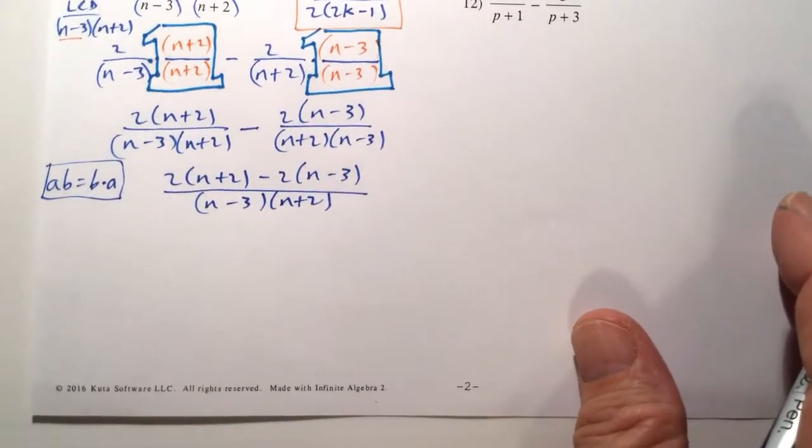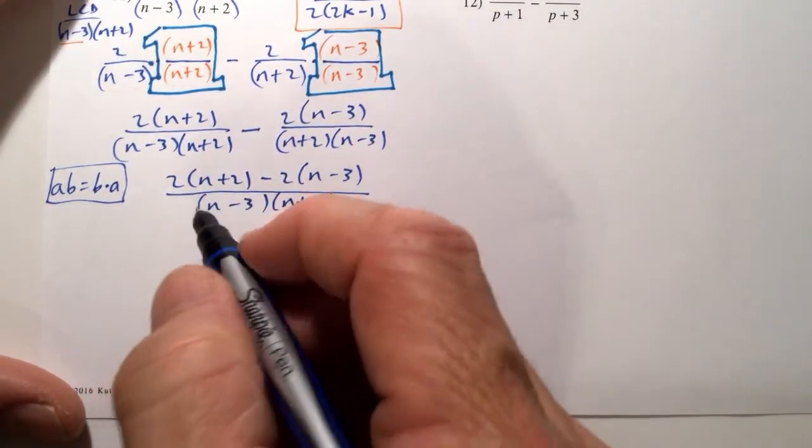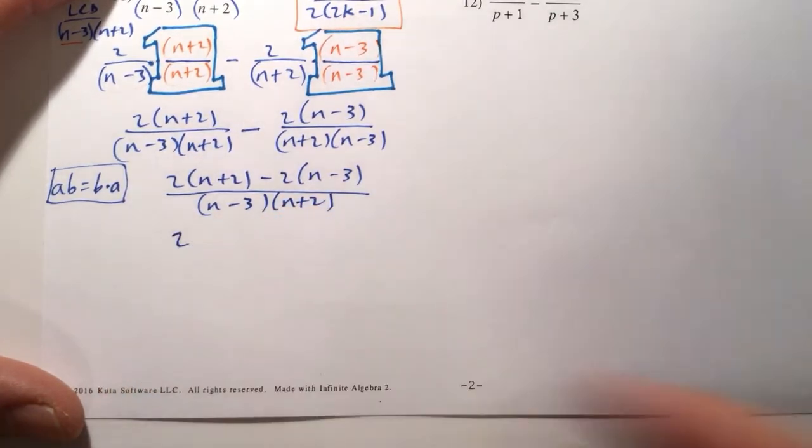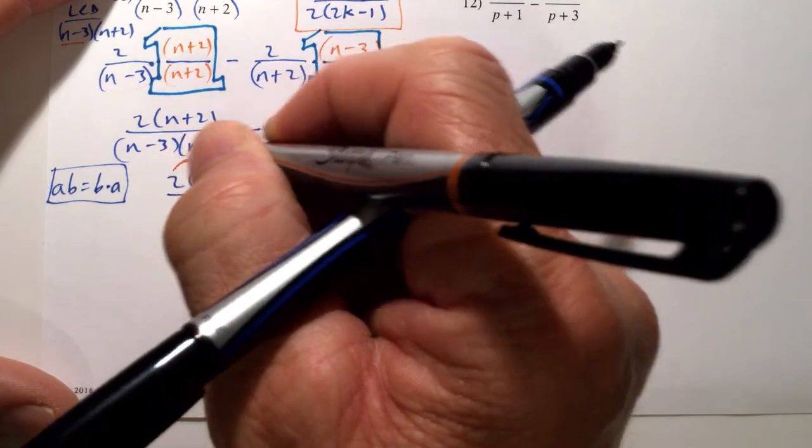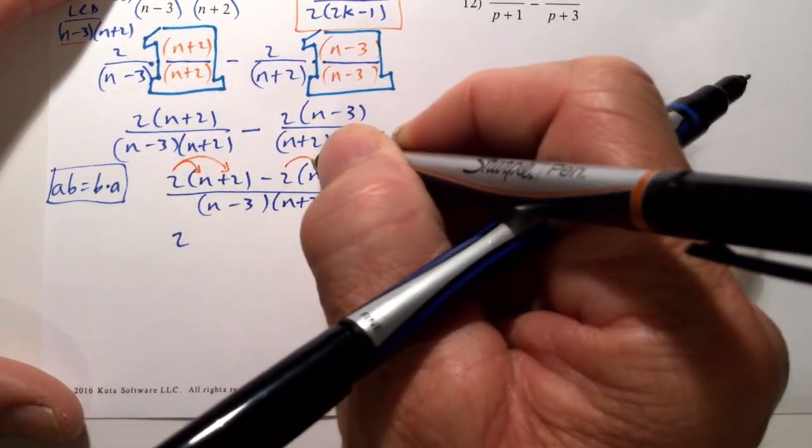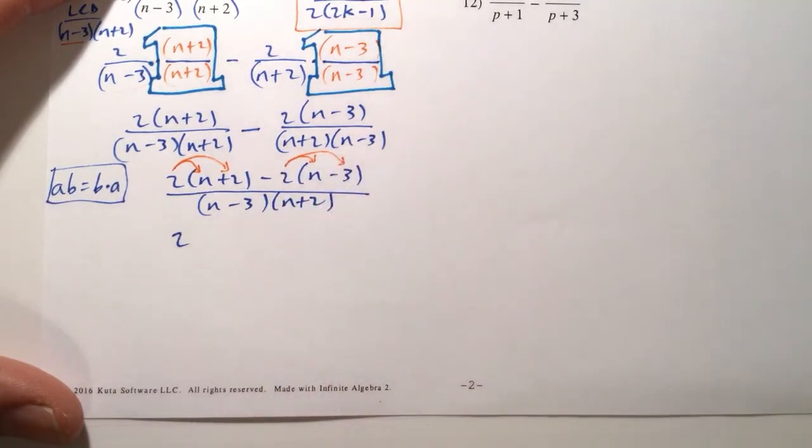Let's see here. But we also have to keep going. We have to make sure we simplify the numerator just in case there's any more simplifying that we can do. Now, we use the distributive property for both the first part of the numerator and the second part.